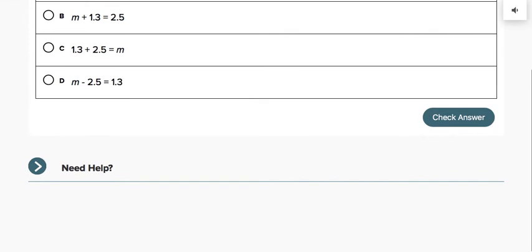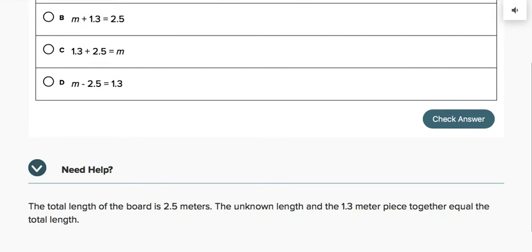Do you need help? Okay, let's try this. We have to understand that the total length of the board is 2.5 meters. Total means the answer in addition. Good. The unknown length, which we can make use of the variable m to represent meter, and the 1.3 meter piece together equal the total length.